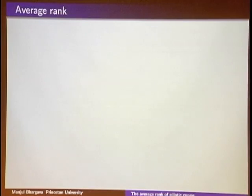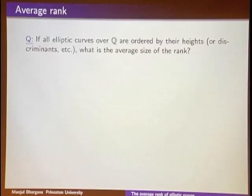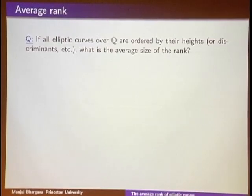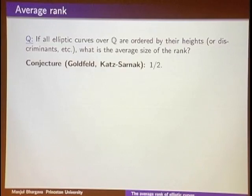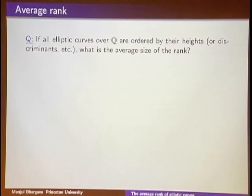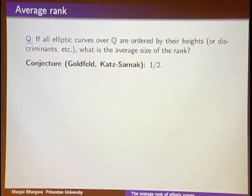Now we can ask: taking all elliptic curves over Q ordered by height, what's the average size of the rank? The standard conjecture, originating in work of Goldfeld and made precise by Katz and Sarnak, is that the average rank should be one half. More precisely, one expects 50% of curves to have rank 0 and 50% to have rank 1. Curves of rank 2 are expected to occur 0% of the time — but not actually zero.